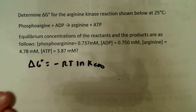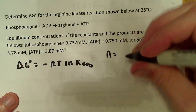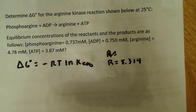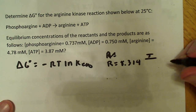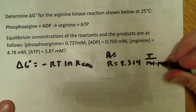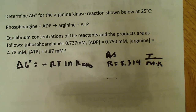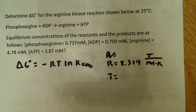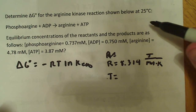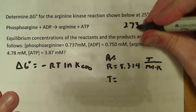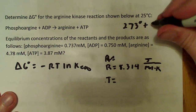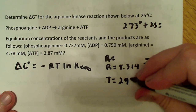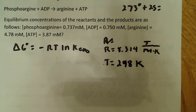We know the gas constant R is equal to 8.314 joules per mole per degree Kelvin. We also know the temperature. Remember, it has to be in Kelvin. To convert Celsius to Kelvin, add 25 to 273, which gives us 298 degrees Kelvin. So that's our temperature and our gas constant.